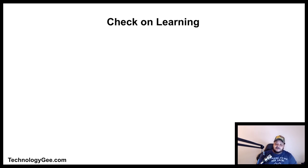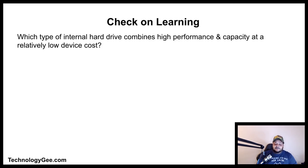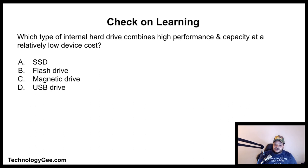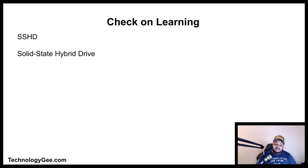Check on learning: Which type of internal hard drive combines high performance and capacity at a relatively low cost — SSD, flash drive, magnetic drive, USB drive, or SSHD? The correct answer is SSHD, or solid state hybrid drive, which is a combination of a solid state drive and a hard disk drive.